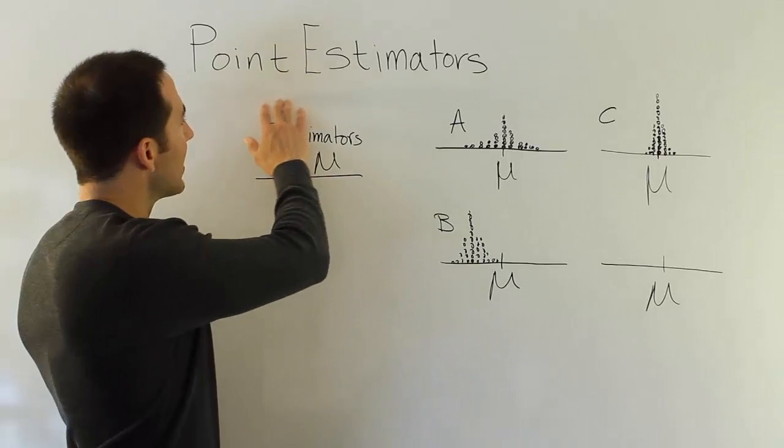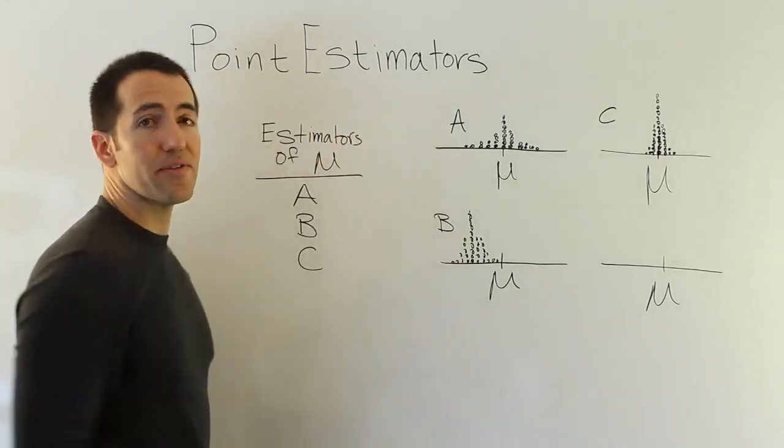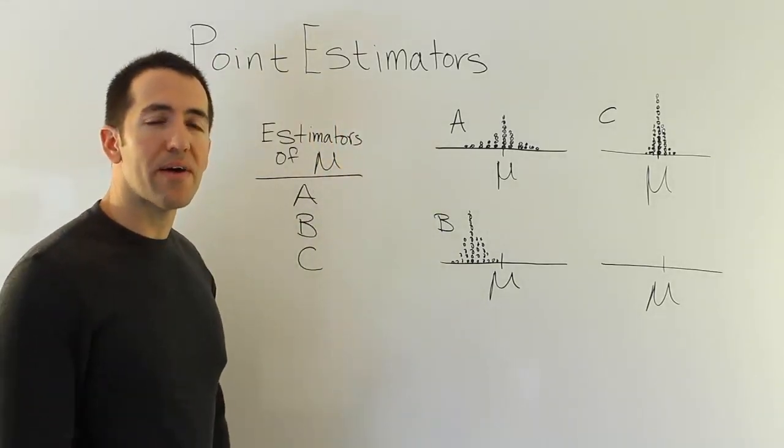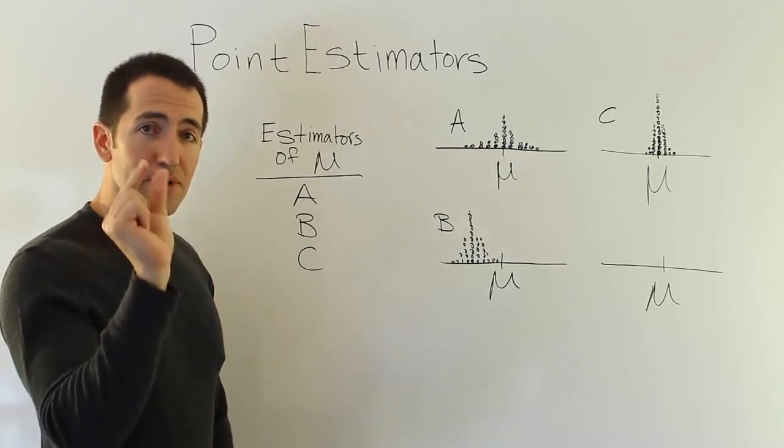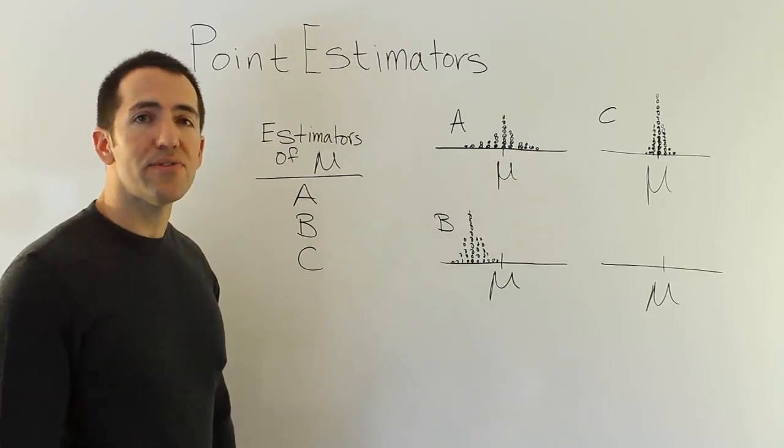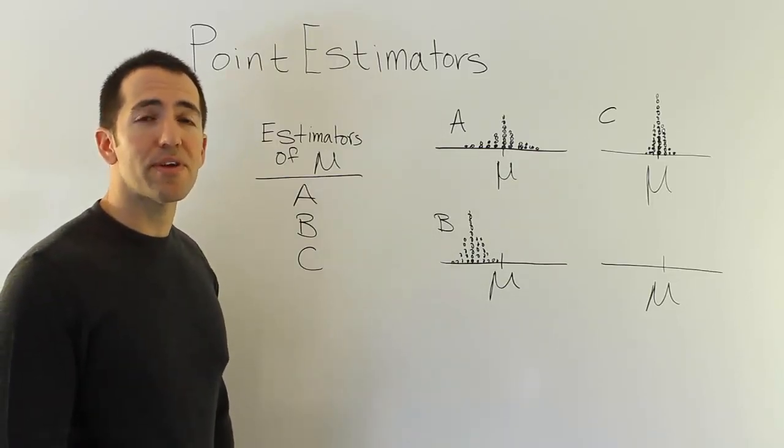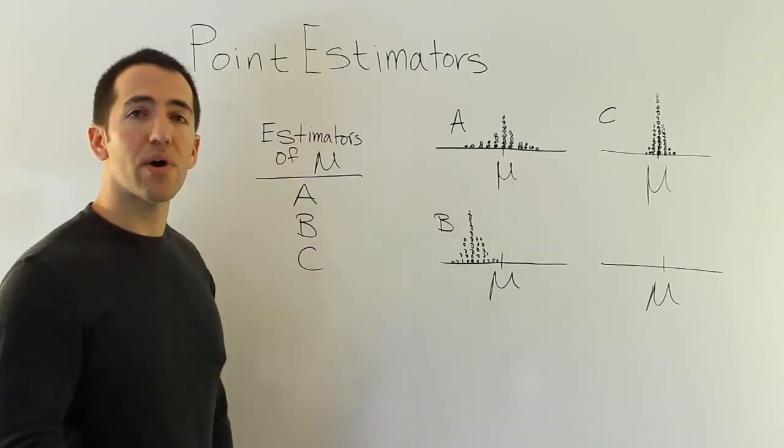So to illustrate this idea, let's first talk about what a point estimator is, because you may not know what I'm talking about. A point estimator is a single number, just one number, that is used to estimate a population parameter that you're interested in. So you have a single number used to estimate a quantity that you want to know.